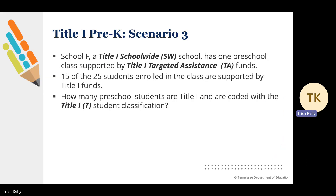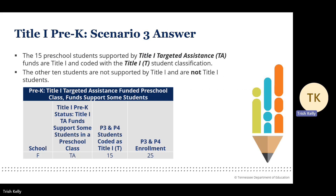Title I Pre-K Scenario 3. School F, a Title I school-wide school, has one preschool class supported by Title I targeted assistance funds. 15 of the 25 students in the class are supported by Title I funds. The 15 preschool students supported by Title I targeted assistance funds are Title I encoded with the Title I-T student classification. The other 10 students are not supported by Title I and are not Title I students.